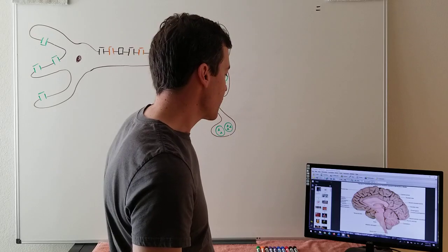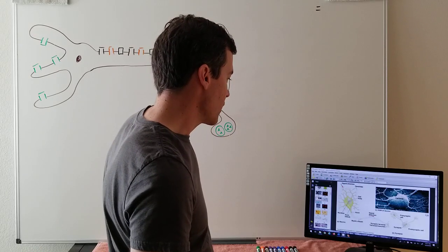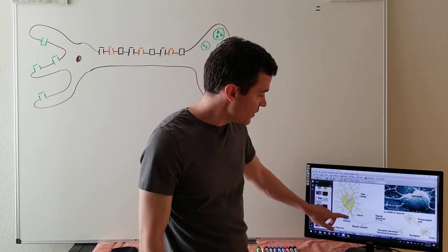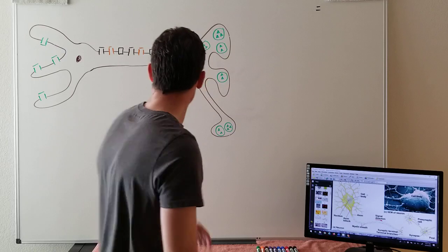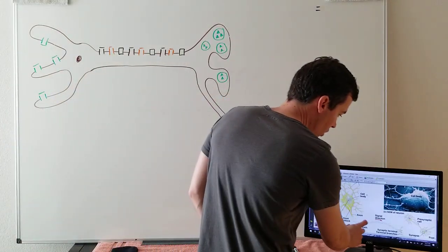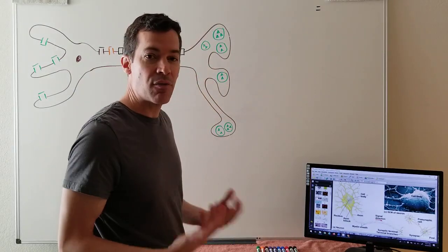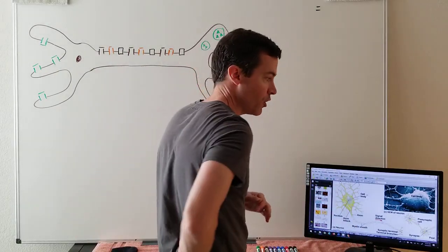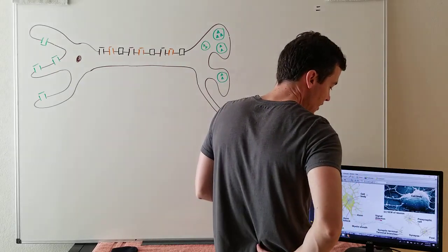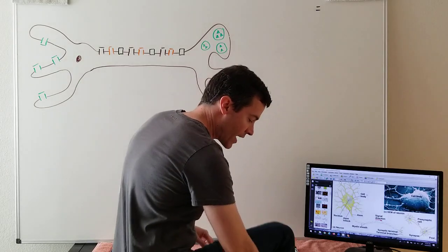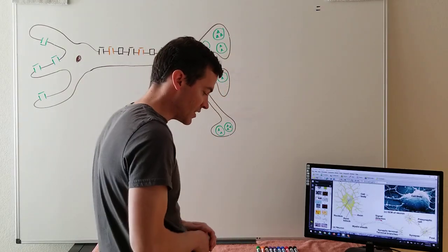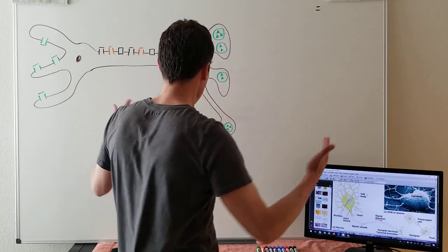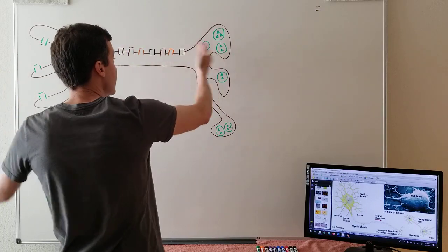What we want to focus on today is how nerve cells actually send a message — essentially how we have a thought. This is a nerve cell, and in this picture it's kind of out of proportion. The cell body holding the nucleus is small, but the axon right here is potentially several feet long. I have individual nerve cells with axons about four feet long, going from the base of my spinal cord all the way down my leg to my big toe.